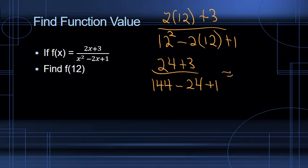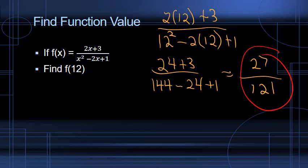Now we combine like terms: 24 plus 3 is 27, over 144 minus 24, which gives us 120, plus 1. So f of 12 is 27 over 121. Now we're going to look at another one, and then a third, and the third one is going to be a little bit more complex.